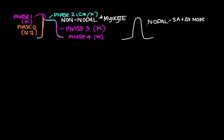What about the nodal cells? The action potential for the nodal cell looks a lot different than the non-nodal cell action potential. For one thing, you don't have phase 1 or phase 2. All you have is phase 0, phase 3 (again, your repolarization phase), and phase 4.